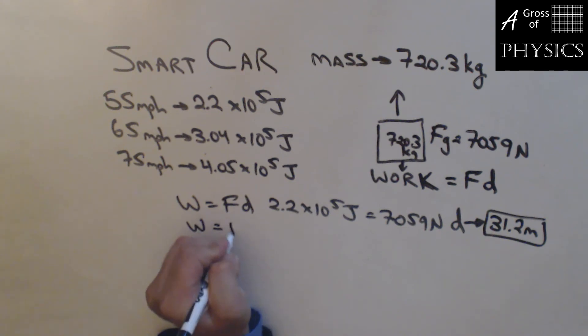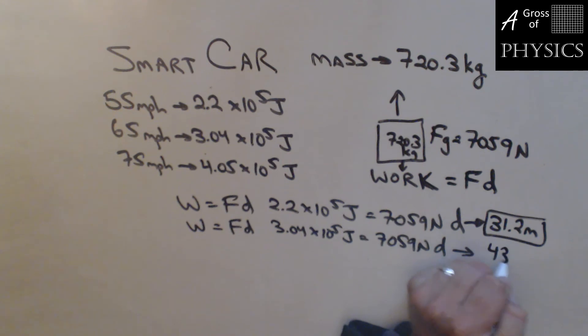If we do the same thing for 65 miles per hour, all we're going to change is the 3.04 times 10 to the 5 joules. It's going to have the same force of gravity, so we're overcoming the same number. We're going to get 3.04E5 divided by 7059, we're lifting it 43 meters in the air. That's even higher. Finally, for 75 miles per hour, 4.05 times 10 to the 5 joules equals 7059 times D. 4.05E5 divided by 7059, and now we're lifting it 57.4 meters into the air.